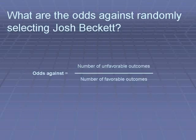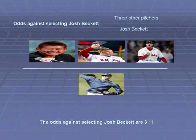Finally, we need to figure out the odds against randomly selecting Josh Beckett. This is just the opposite of odds in favor — the number of unfavorable outcomes over the number of favorable outcomes. So we'd have Dice K, Jon Lester, and Papelbon in the numerator, and Josh Beckett in the denominator. The odds against selecting Josh Beckett would be three to one. To review: the probability was one to four, the odds in favor was one to three, and the odds against was three to one.